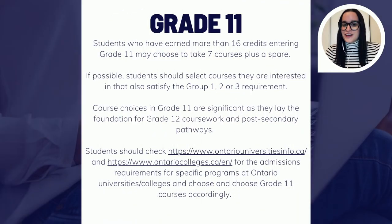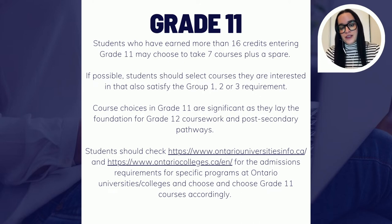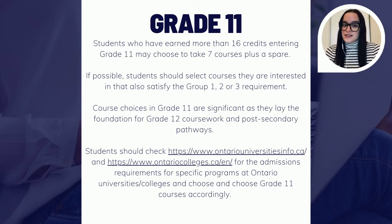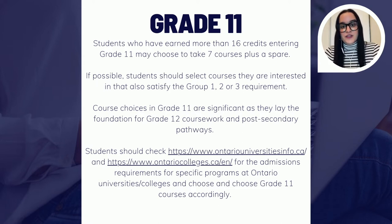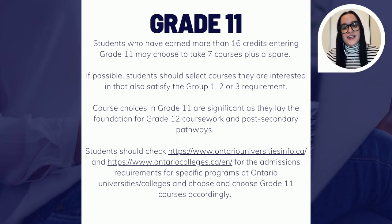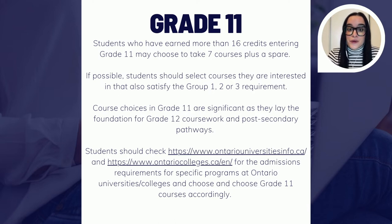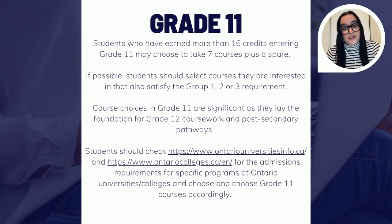Students entering grade 11 with 16 accumulated credits from grade 9 and 10 are required to take eight courses, or a full course load. Students coming in with more than 16 accumulated credits are allowed to take seven courses plus one spare. At the time of grade 11 course selection, it's also really important for students to take stock of those Group 1, 2, and 3 requirements, and try to schedule those in so they don't have to worry about them in grade 12.